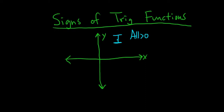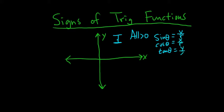By all, I mean sine of theta, cosine of theta, and tangent of theta. Sine of theta is y over r, cosine of theta is x over r, and tangent of theta is y over x. In this quadrant, both x and y are positive, so all of these are positive. y is positive and r is also positive, so positive over positive is positive. Likewise, x is positive, r is positive — positive over positive is positive. And y and x are both positive, so dividing two positive numbers gives a positive number.